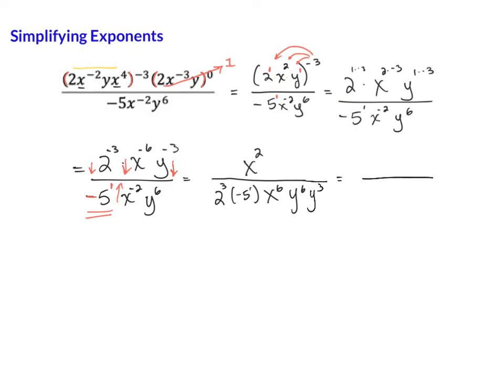Okay. So first of all, 2 to the third is 8, because it's 2 times 2 times 2, which gives me an 8 in the denominator. So this is going to be 8 times negative 5, and that's negative 40.